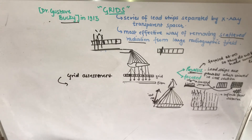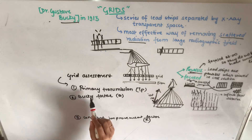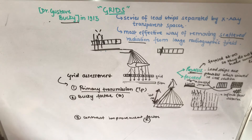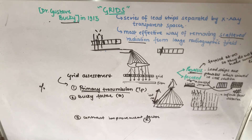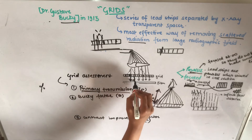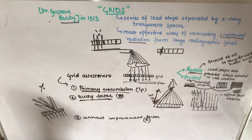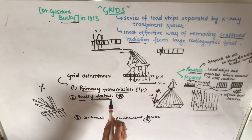For grid assessment, several factors must be considered. The first is primary transmission — this is the measurement of the percentage of primary radiation that is transmitted through the grid.